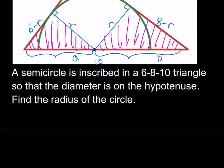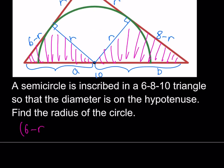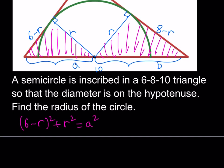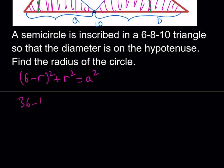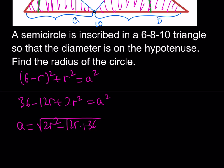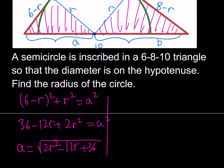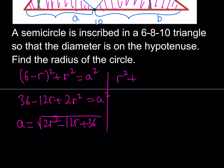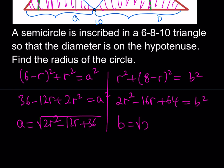I'd like to write (6 minus r)² plus r² equals a². Expanding this, it becomes 2r² minus 12r plus 36, so a equals the square root of that. My second step involves getting b in terms of r: r² plus (8 minus r)² equals b². From here we get 2r² minus 16r plus 64, so b equals the square root of that expression.